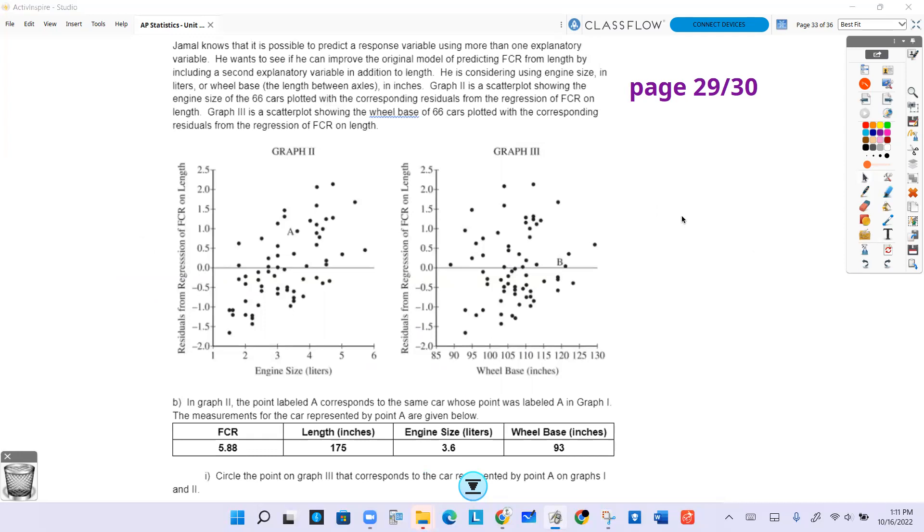Part B. Jamal knows it's possible to predict a response variable using more than one explanatory variable. He wants to see if he can improve the original model by including a second explanatory variable in addition to length. He is considering using engine size in liters or wheelbase in inches.